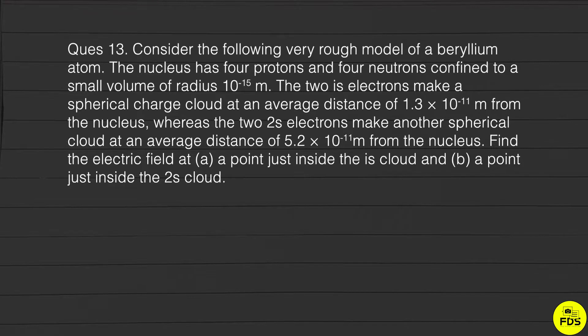electrons make a spherical charge cloud at an average distance of 1.3 × 10^-11 meters from the nucleus, whereas the 2s electrons make another spherical cloud at an average distance of 5.2 × 10^-11